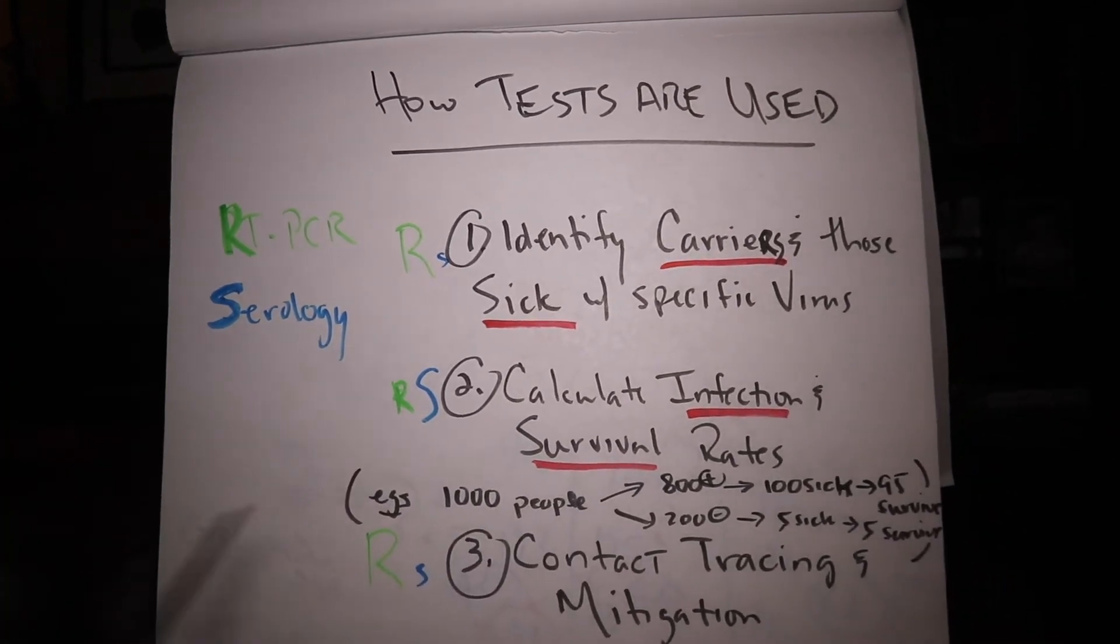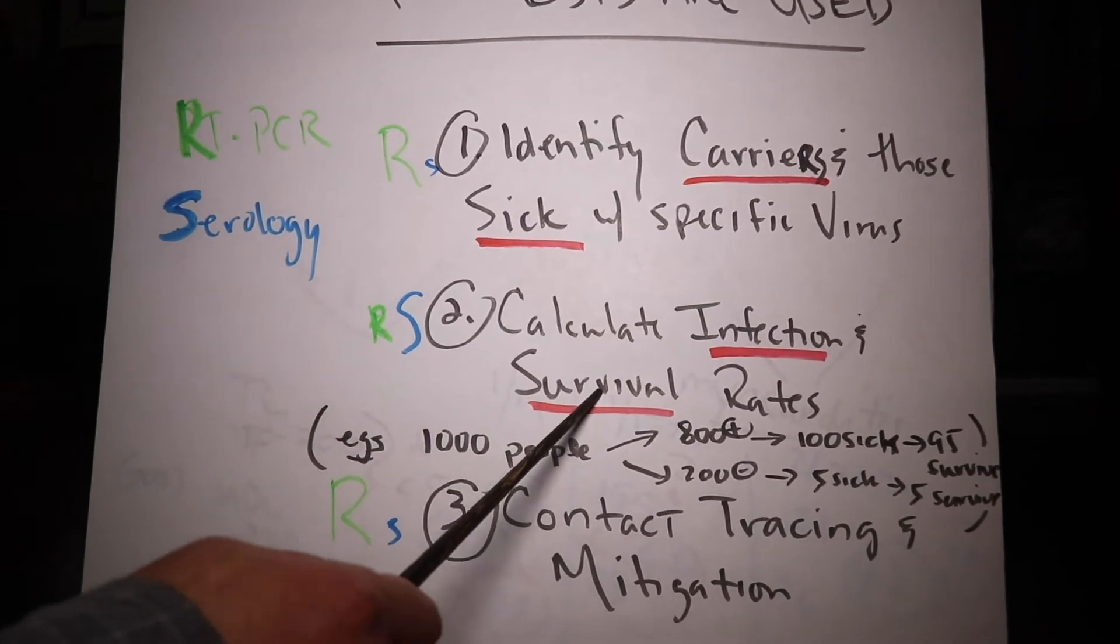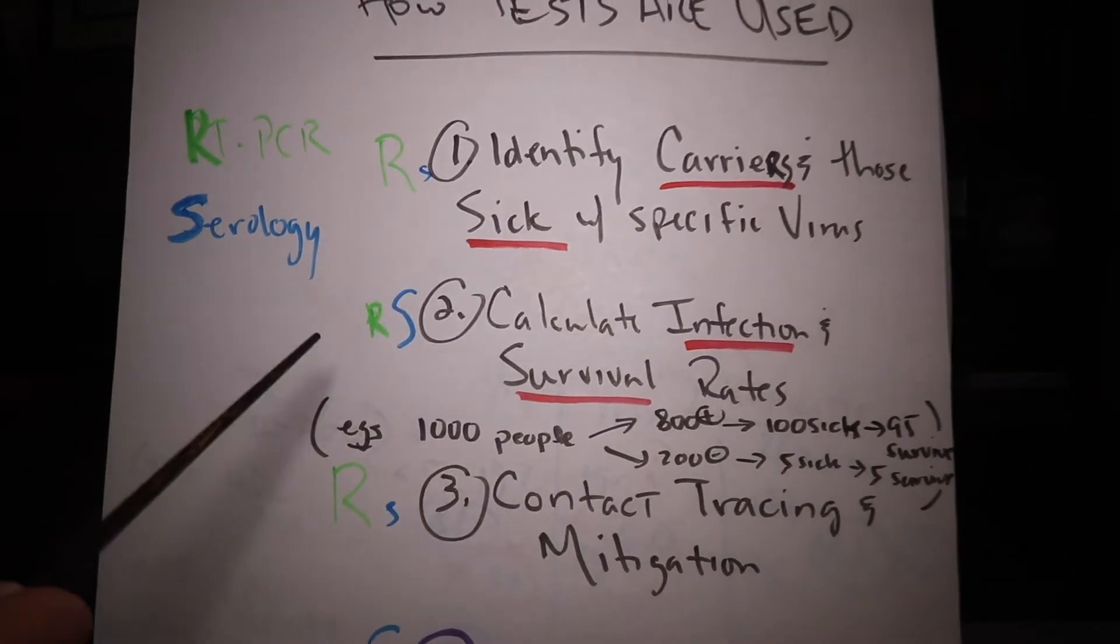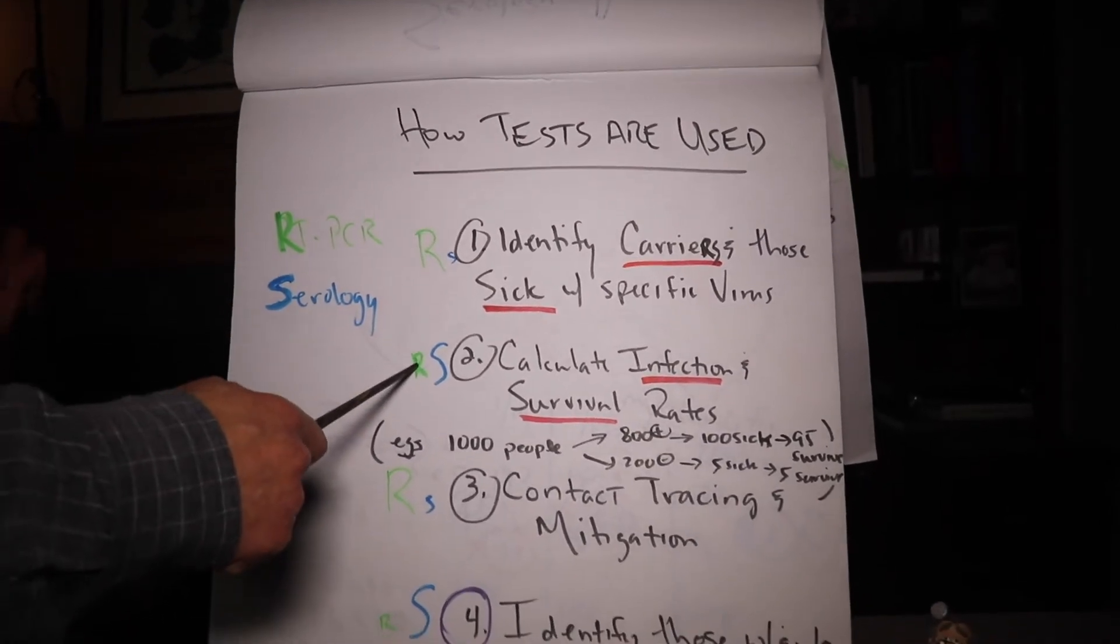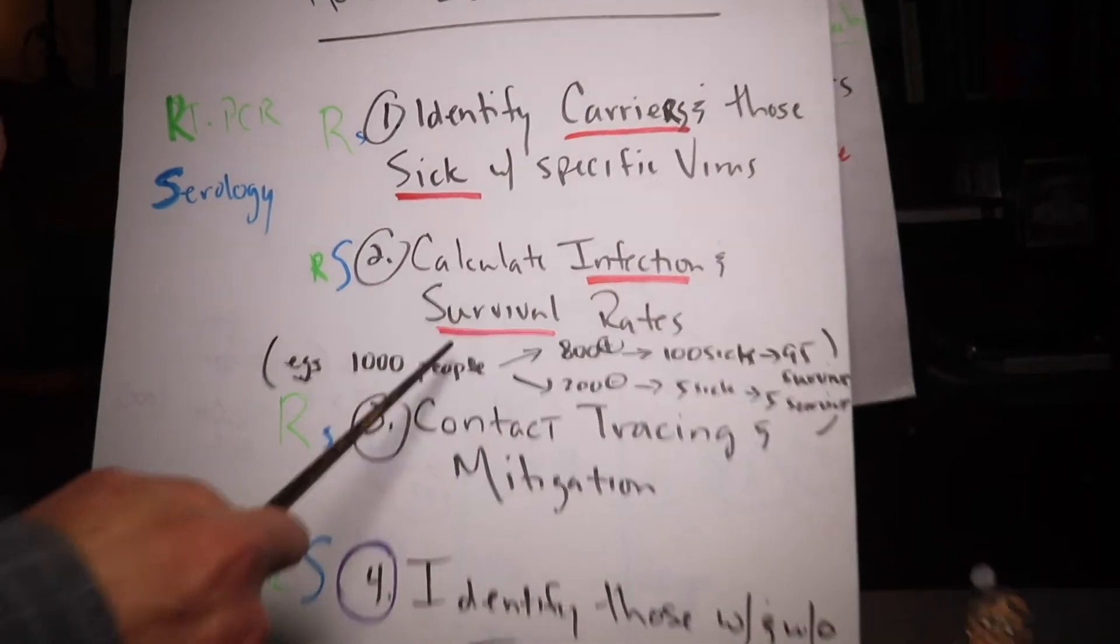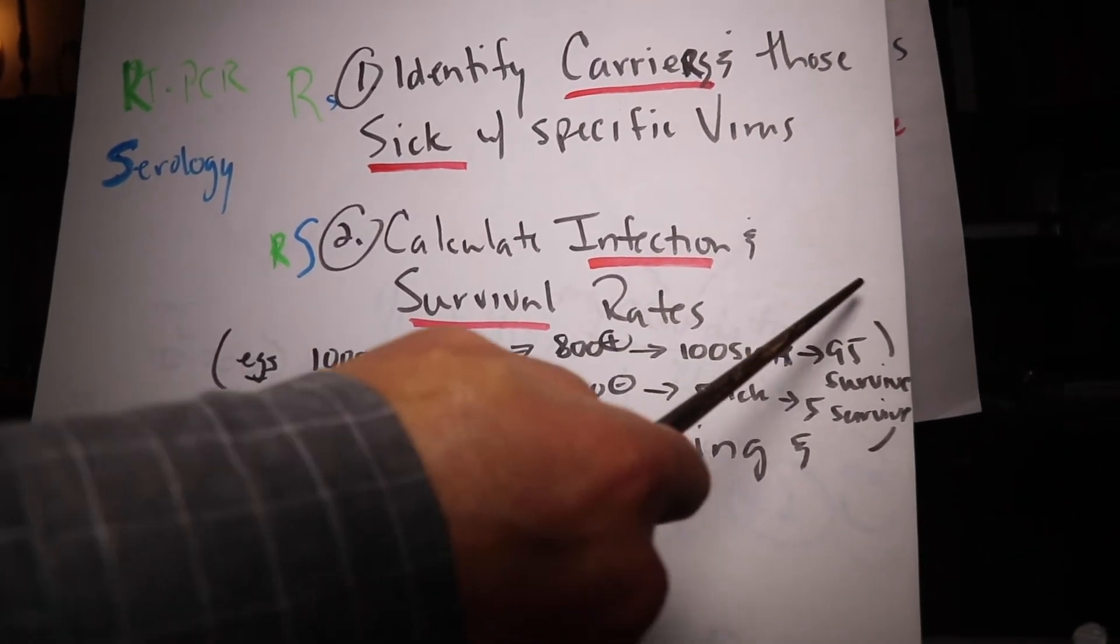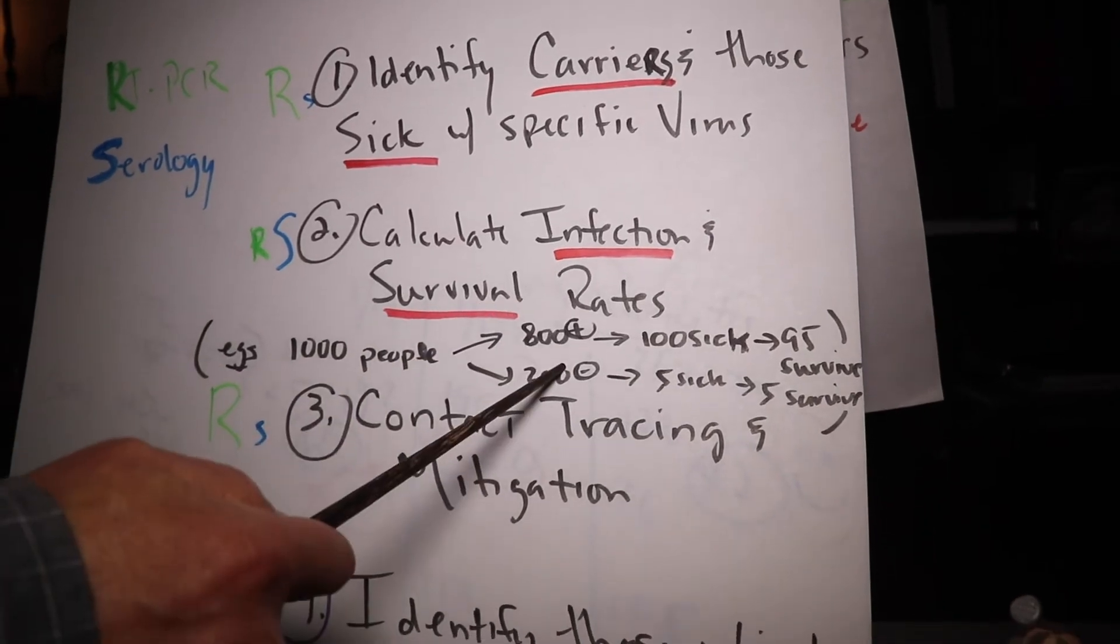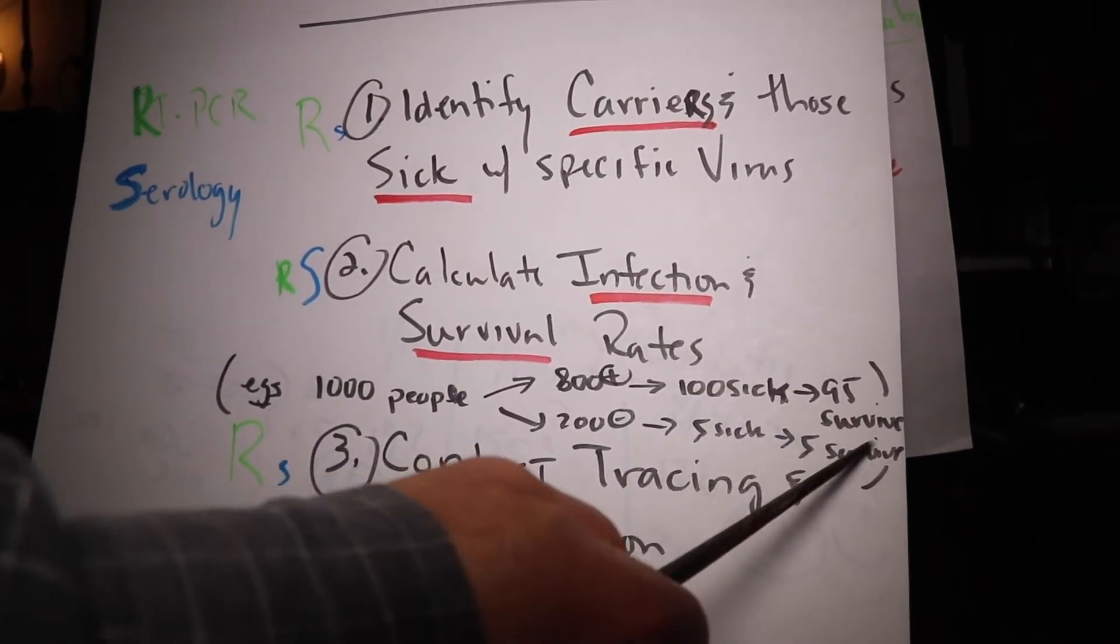The next way we're going to use this is to calculate how many people have the infection, and how many survive after they do. That's going to be best using the one that uses the antibodies, because the infection may be gone by that point. So, for example, if we go down into Brooklyn and take a thousand people, and 800 of them are positive on the test, how many will get sick and how many will survive? If 200 are negative on the test, will any of them get sick, in this case only five, and how many will survive? This is the way we're going to use these tests.